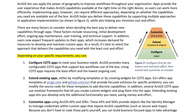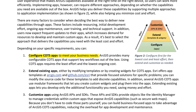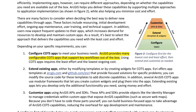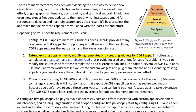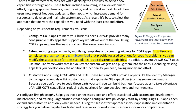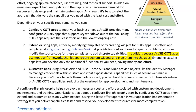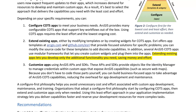There are many factors to consider when deciding the best way to deliver new capabilities through apps, including resourcing, initial development effort, ongoing app maintenance, user training, and technical support. In addition, users now expect frequent updates to their apps, which increases demand for resources to develop and maintain custom apps. As a result, it's best to select the approach that delivers the capabilities you need with the least cost and effort. You can: 1. Configure COTS apps to meet your business needs. ArcGIS provides many configurable COTS apps that support key workflows out of the box, requiring the least effort and the lowest ongoing cost.